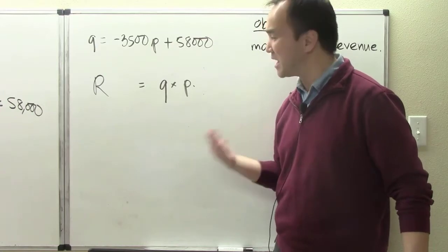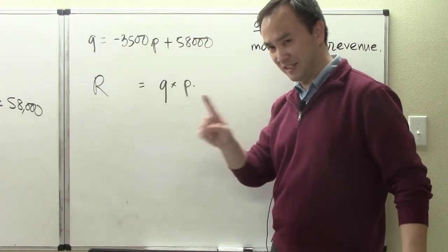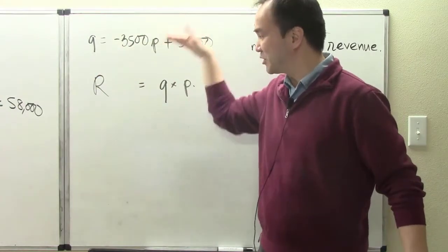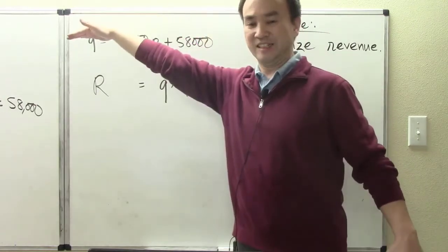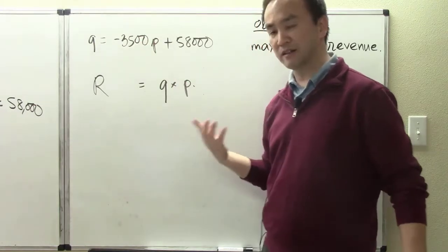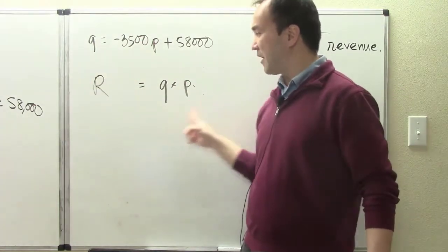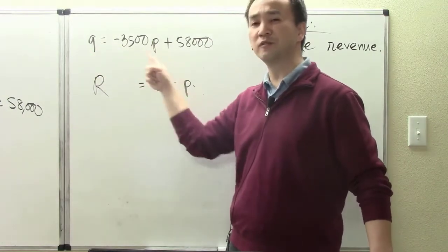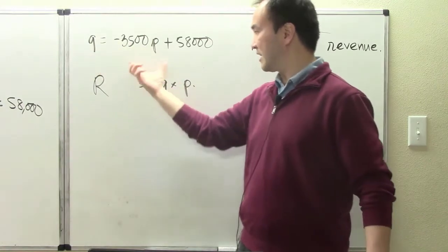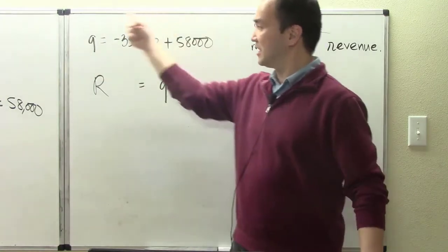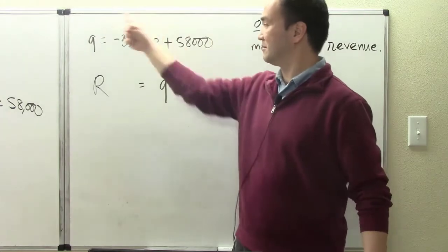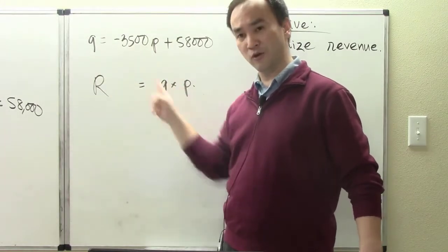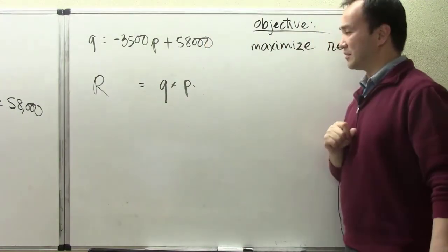For this particular problem it is not very clear where the constraint is, and someone might believe there is no constraint. But this is how I see it: the demand equation is our constraint. This function involves two variables Q and P, and with this equation pointing out the relationship between them, we can take advantage of that and substitute Q into our revenue function. This equation is playing the role of a constraint.